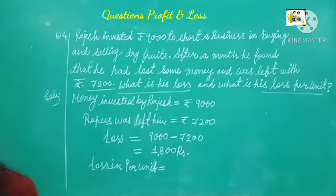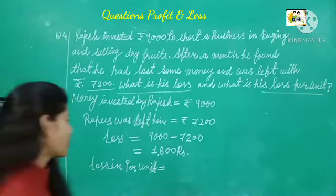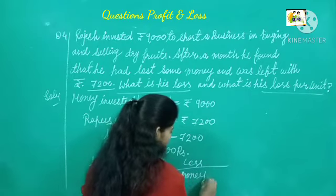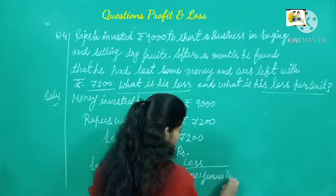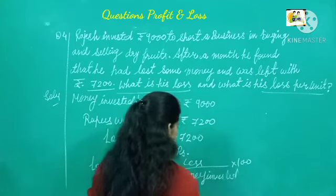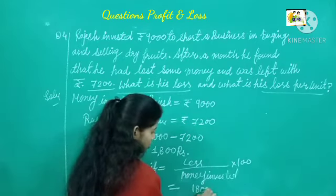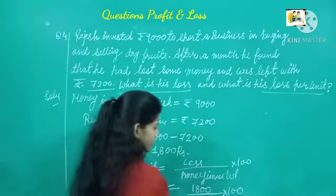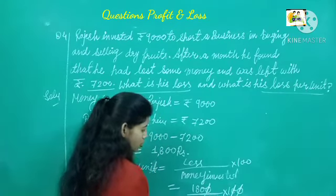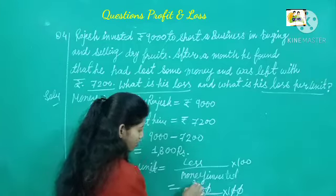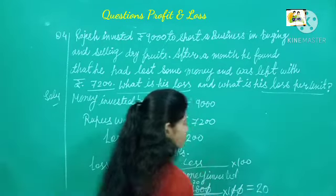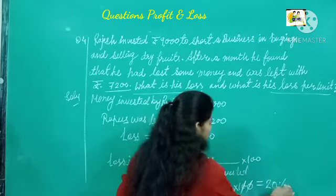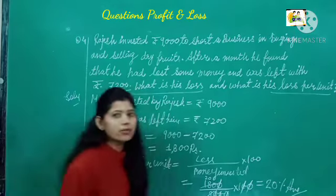Loss percent is equal to loss upon money invested, multiplied by one hundred. That is 1800 divided by 9000, multiplied by 100, which equals 20 per cent loss. So the loss percent is 20%. This is your solution number 4.